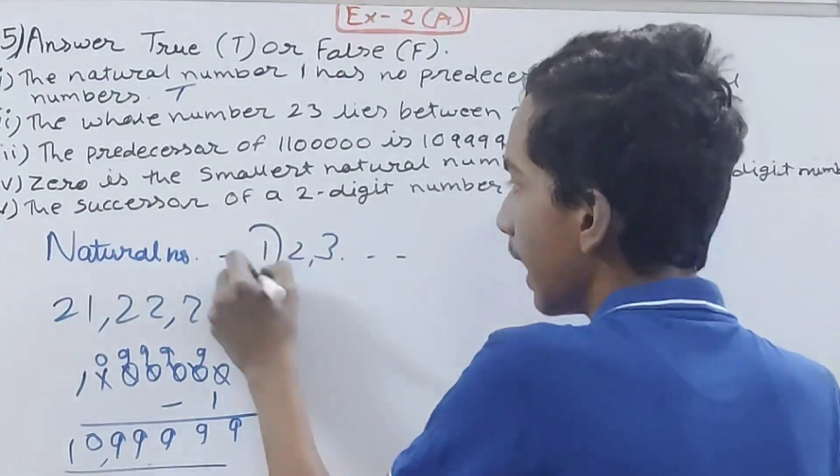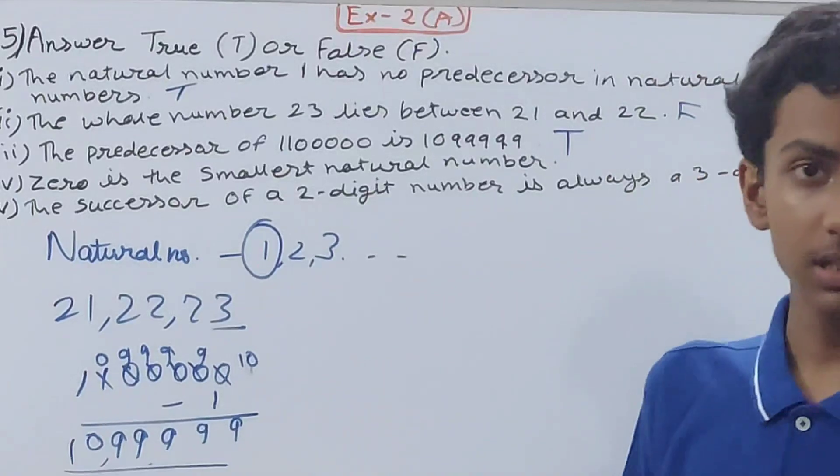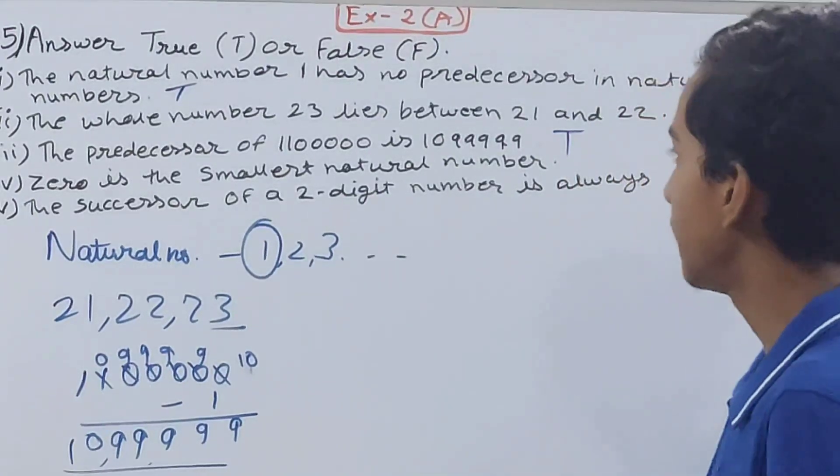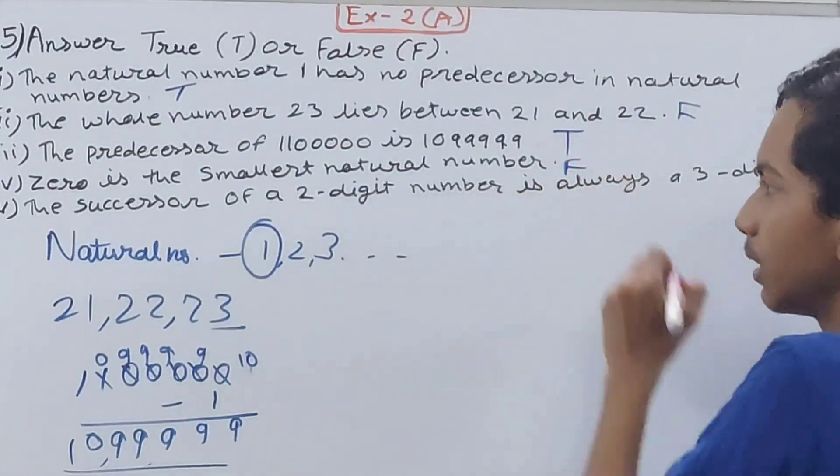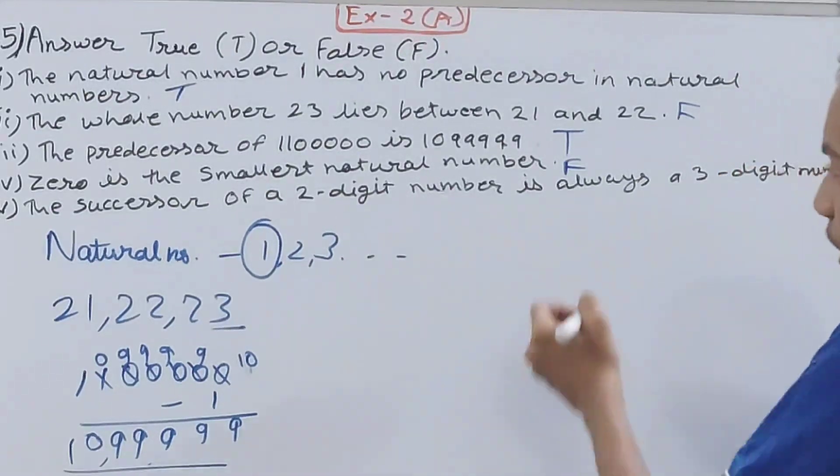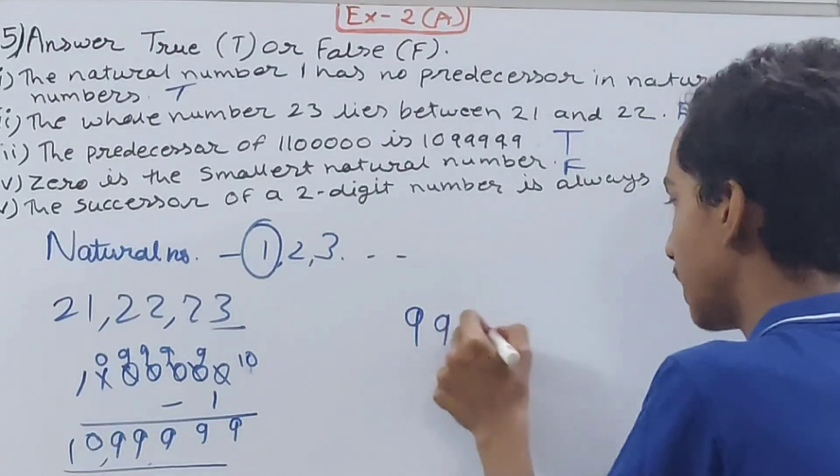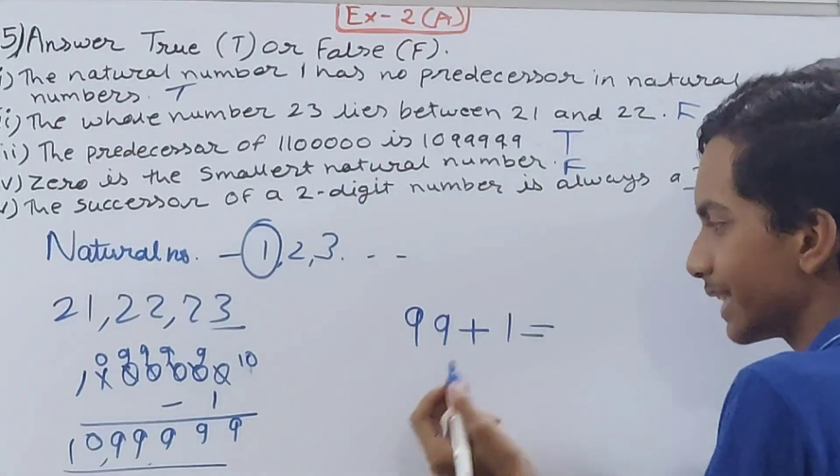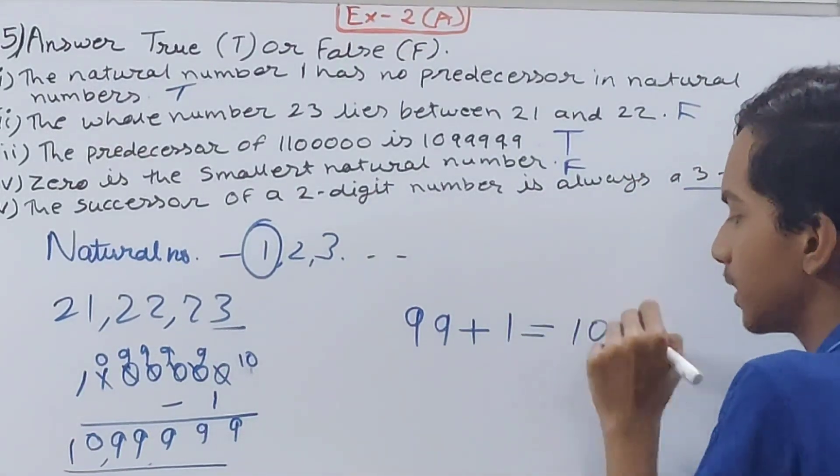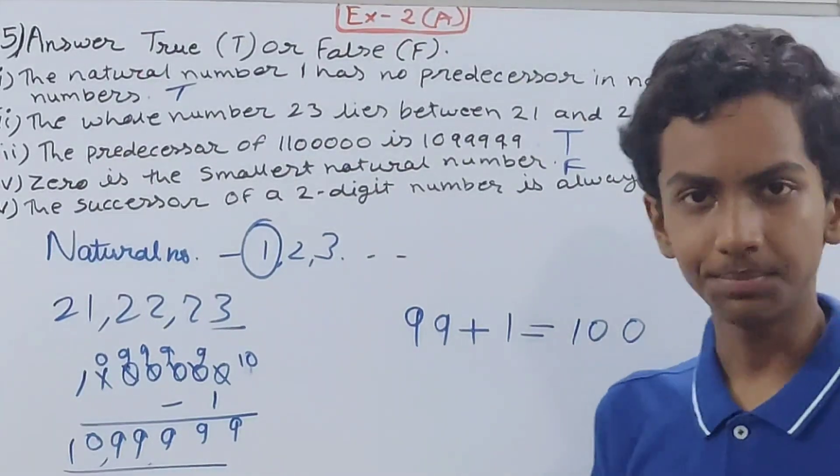Successor of a two-digit number is always a three-digit number. Let's see. Let's take a two-digit number, 99, and I add 1 to this because successor means plus 1, which will give me 100. So this is a three-digit number, so this is true.